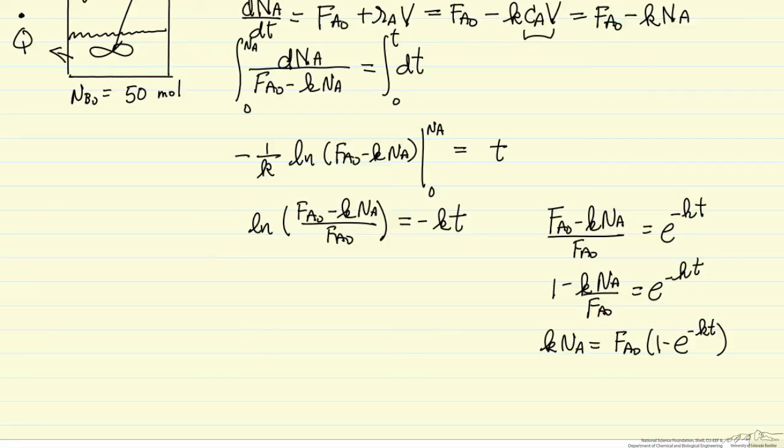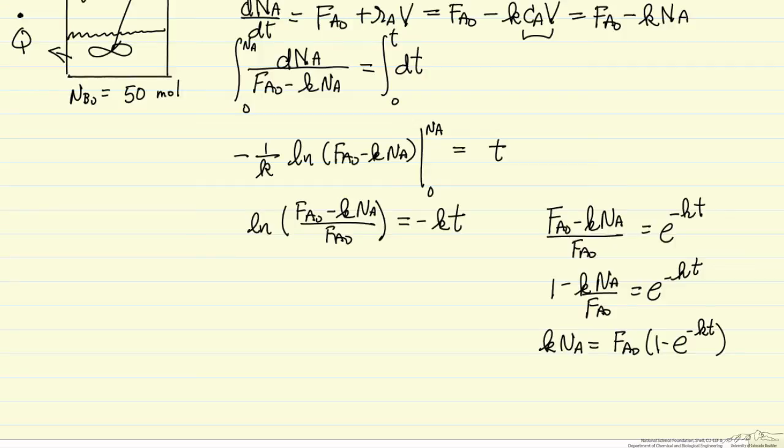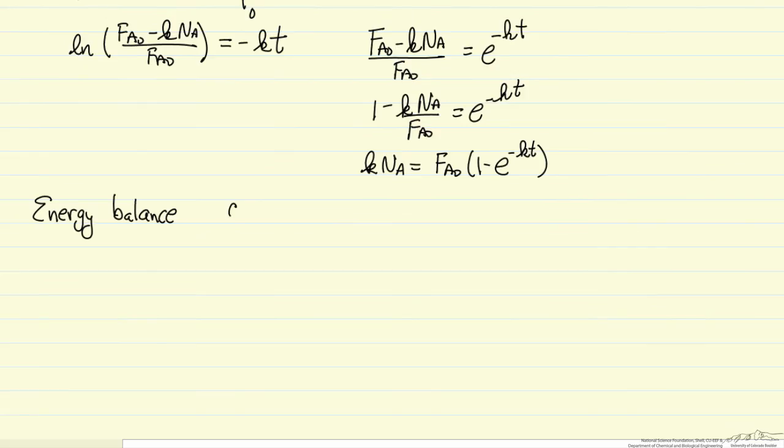I'm now going to use this K in A value in the energy balance. So now we're going to write the energy balance. First thing we should note is that the derivative of temperature with respect to the time is going to be 0. We want to keep this 100 degrees C.